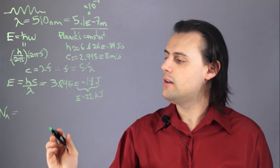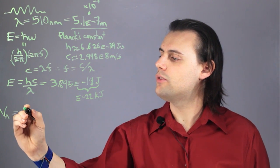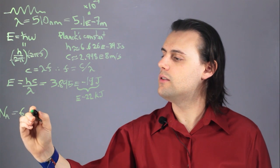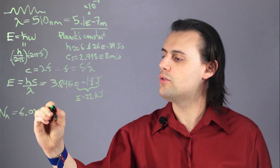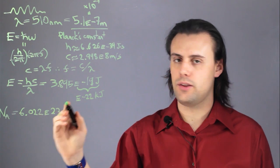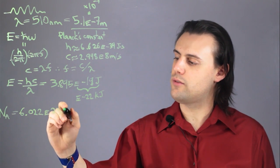Avogadro's number is approximately equal to 6.022 times 10 to the 23. And the units are in inverse moles. What it really is, it's this many particles per mole.